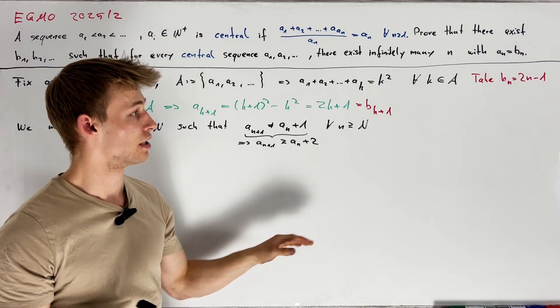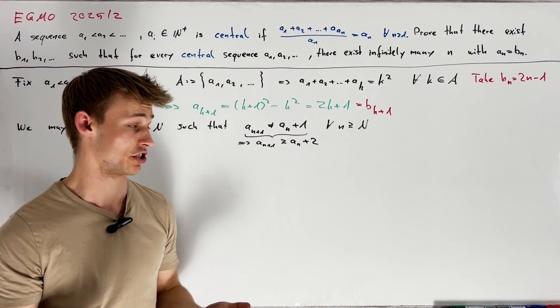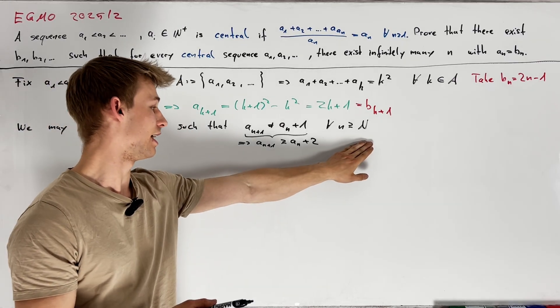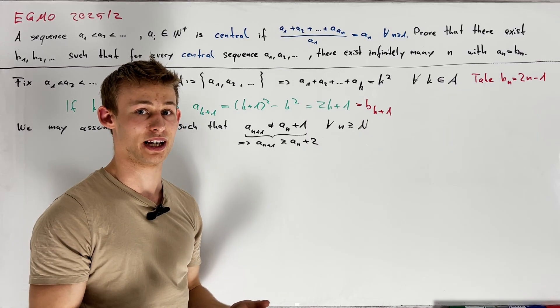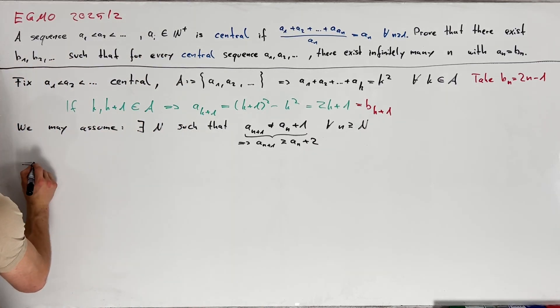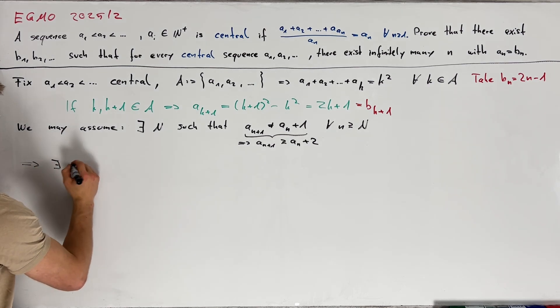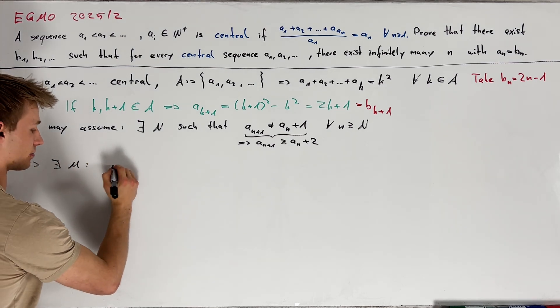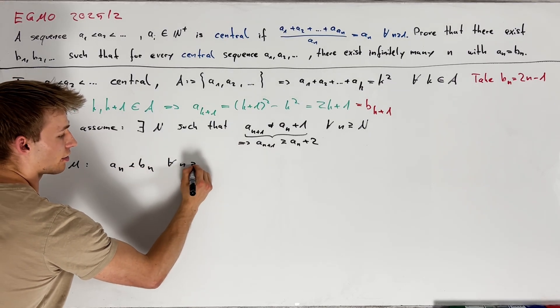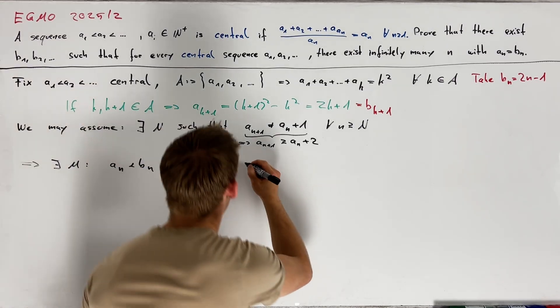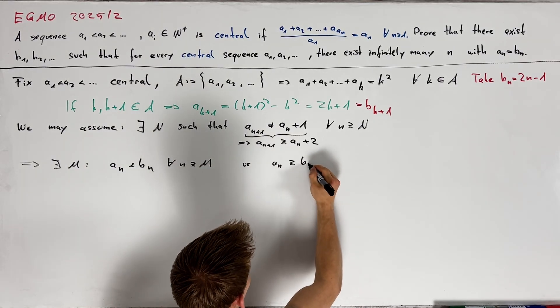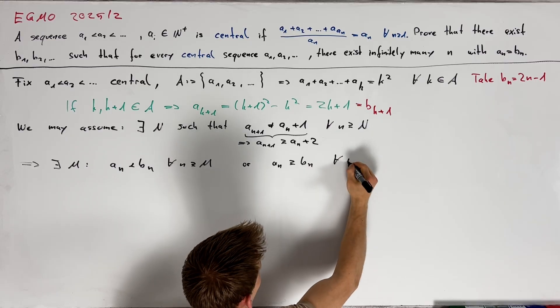On the other hand we know that bn increases by exactly 2 in each step and therefore if at any point after capital N we have that an is greater than or equal to bn, this has to hold from that point on. Hence we can conclude that we find some time point m such that an is less than bn for all n greater than or equal to m, or an is greater than or equal to bn for all n greater than or equal to m.